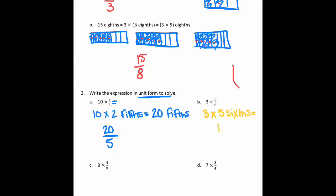So 10 times 2 fifths is 20 fifths, which is going to be 20 fifths, just like that. I'm going to do the same with 3 and 5 sixths. So 3 times 5 sixths with sixths written in word form. So I'm going to get 15 sixths, and if I were to write that numerically, it would be 15 over 6.